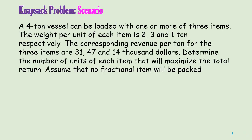Let us take an instance of the Knapsack Problem to understand those DP elements. Here is a scenario: you have a 4-ton vessel that can be loaded with 3 items. Item 1 has 2 tons of weight, item 2 has 3 tons of weight, and item 3 has 1 ton of weight. In addition to that, the revenue per ton of item 1 is 31, 47 for item 2, and 14 for item 3. The objective is to determine the number of units for each item that will maximize the total revenue.